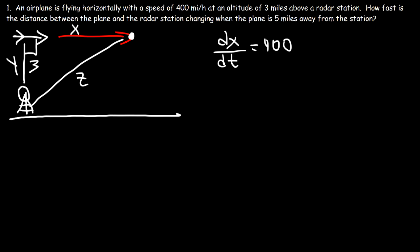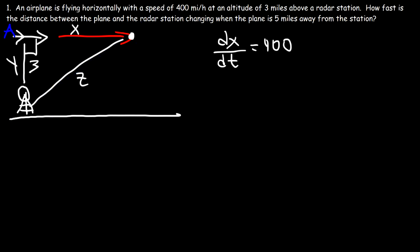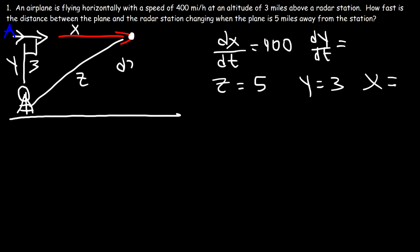Y equals 3 because the plane is traveling at an altitude of 3 miles above the radar station. At some point the plane will be 5 miles away — that's Z. Z equals 5, Y equals 3. We don't have the value of X, but our goal is to calculate dz/dt, since Z is the distance between the plane and the radar station.